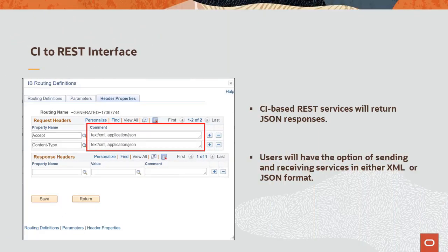Integration Broker creates web services, including REST-based web services, from a component interface. This makes it easy to expose business logic in standard ways. In addition to sending and receiving these services in XML format, PeopleTools 8.5.8 introduces support for sending and receiving the services in JSON as well. This completes our discussion of the CI to REST interface feature.